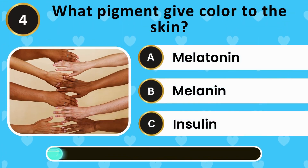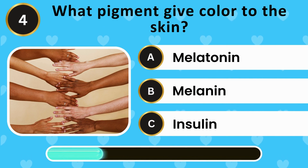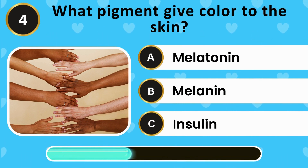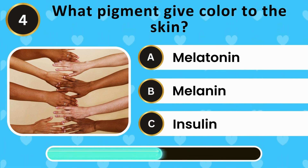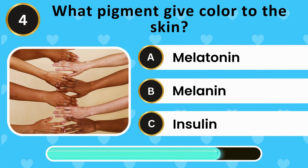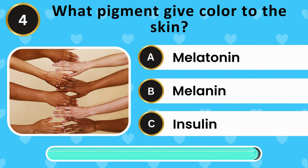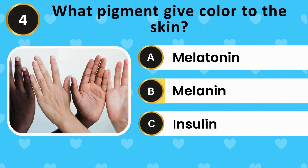What pigment gives color to the skin? Melatonin, melanin, insulin. The answer is melanin.